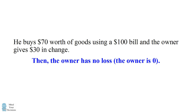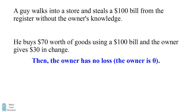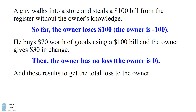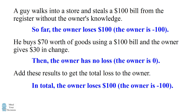So now we put these two stories together. The total loss will be the sum of these two parts. So we can add negative $100 and $0 to get that the total loss is $100. The owner is negative $100 from before the story started. So the correct answer is the owner lost $100.